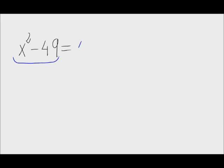In this case, this is very simple, as we have x squared minus 49. Remember that 49 is 7 times 7, so here we have 7 squared, which is a difference of squares.